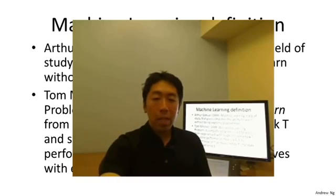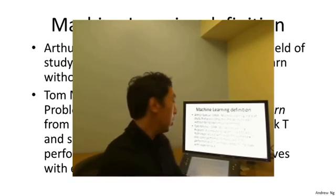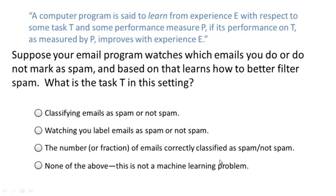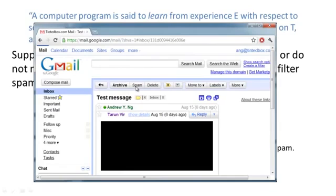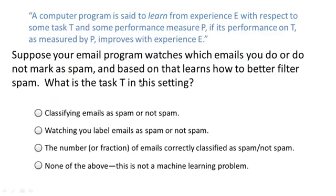Throughout these videos, I'll occasionally ask you a question to make sure you understand the content. Here's one. Using Tom Mitchell's definition of machine learning, let's say your email program watches which emails you do or do not flag as spam. In an email client, you might click the spam button to report some email as spam but not others. And based on which emails you mark as spam, your email program learns better how to filter spam email. What is the task T in this setting? The video will pause and you can use your mouse to select one of four radio buttons with your answer.